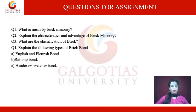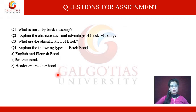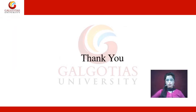Now, some questions for assignment. First is what is brick masonry. Second is explain the characteristics and advantages of brick masonry. Third is what are the classifications of brick. Fourth is explain the following types of brick bond: English and Flemish bond, rat trap bond, header and stretcher bond — support your answer with suitable sketches and terminologies. Thank you everyone for listening and watching this video lecture.